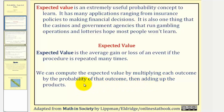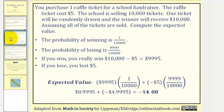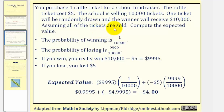Let's take a look at an example. You purchase one raffle ticket for a school fundraiser. The raffle ticket costs $5. The school is selling 10,000 tickets. One ticket will be randomly drawn and the winner will receive $10,000. Assume all tickets are sold — compute the expected value.